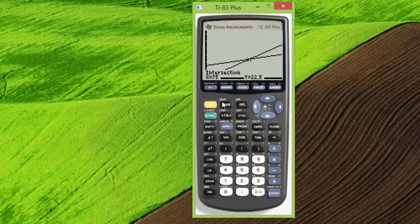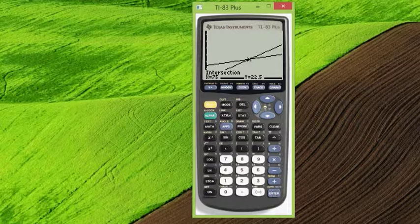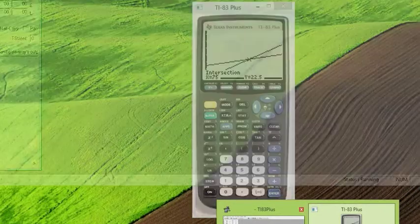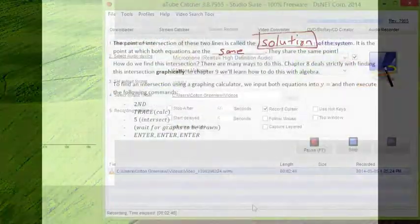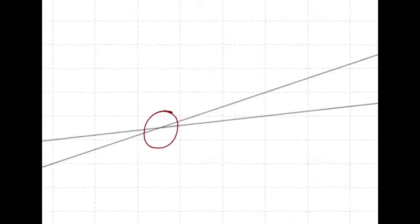Okay, so again, that was 2nd, trace, 5, enter, enter, enter. Okay? We got the point 75 and 22.5. That's the intersection point, right? That's this point right here. 75, 22.5.